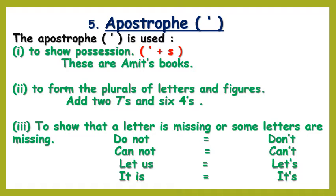Always remember that we never use apostrophe plus S for making any singular noun plural. We also use the apostrophe to form the plurals of letters and figures. For example, if we have to say 'add two 7s and six 4s,' we write the digits with an apostrophe S.